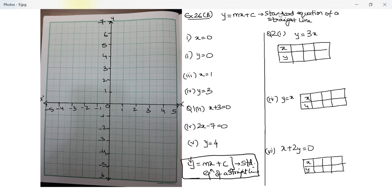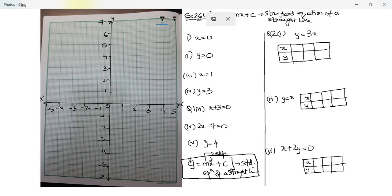What is y? y is the y-coordinate, x is the x-coordinate, m is something which we call the slope — I'll come to that in a minute — and c is the y-intercept. So y equals mx plus c is the standard equation of a straight line.